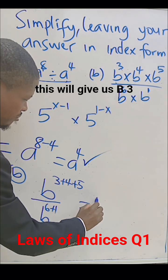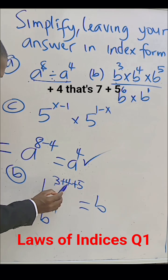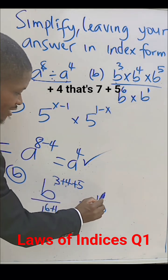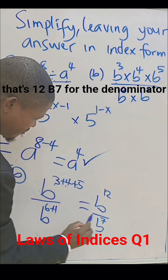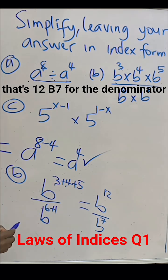So this will give us B to power 3 plus 4, that's 7, plus 5, that's 12, over B to power 7 for the denominator. And then,